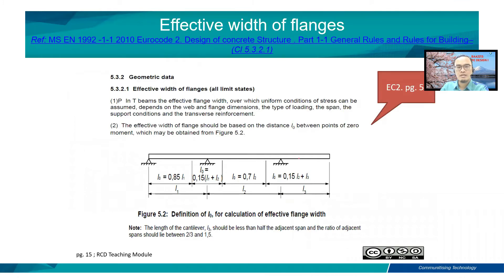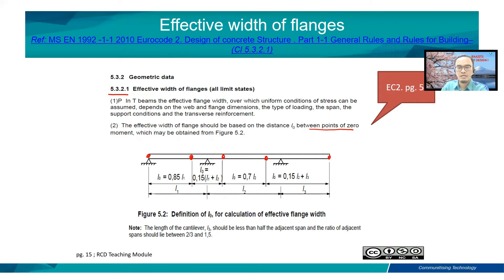This is how to determine the effective width of the flange by referring to Clause 4.3.2.1. It can be determined based on the positions of the sections, which is strongly based on the distance of zero moments. The zero moments are expected to occur at specific positions along the beam, and L_0 depends on the position of the zero moment.